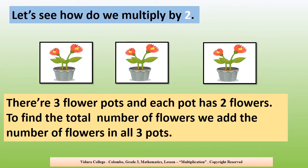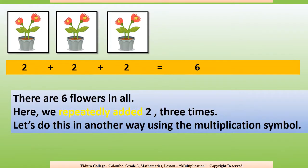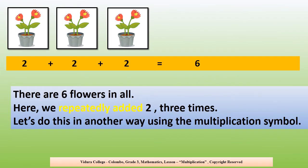Let's see how do we multiply by 2. Can you see children, there are 3 flower pots and each pot has 2 flowers. To find the total number of flowers, we add the number of flowers in all these 3 pots. This is how we do it. 2 plus 2 plus 2 is 6. There are 6 flowers in all.